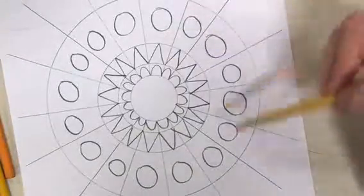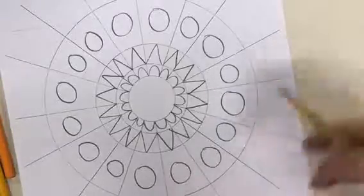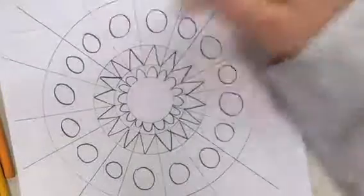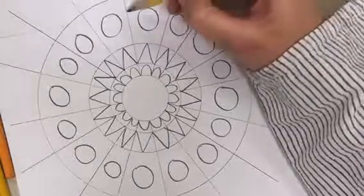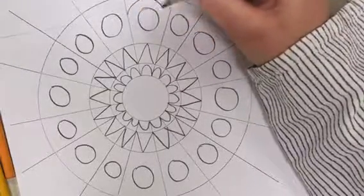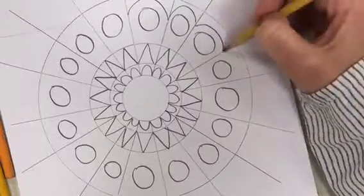All right, so now you could start to color it, or you can try and add a little bit more. So in each one of these I have a circle. Well, what if I do kind of a bump that goes around the circle like that? So then on each of these, I'm going to do a bump that kind of goes up and around the circle.